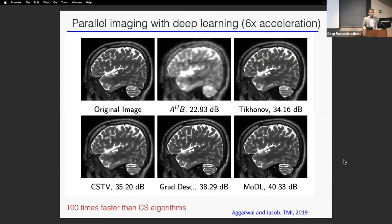Here are some early results — a few years old. This is a six-fold acceleration. Using model-based deep learning, we were able to get something pretty close to the original image, and compared to compressed sensing with TV and wavelet regularization, it does better than other methods.